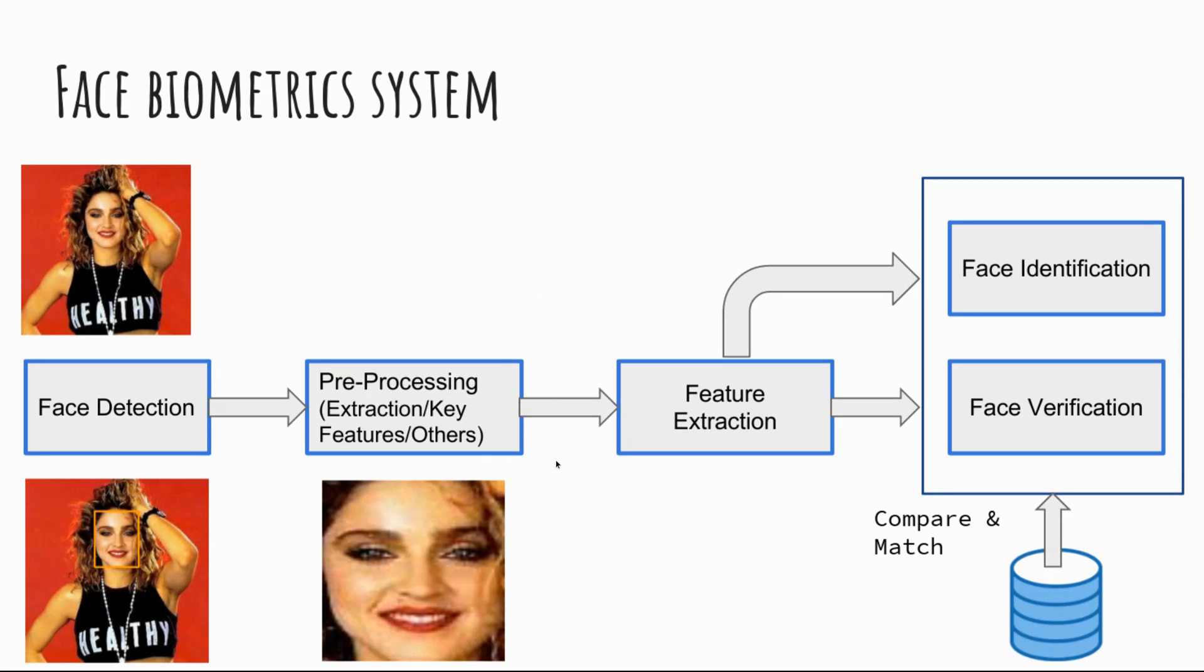For example, if you have a smart advertisement board and want to display advertisements according to a person's gender or age, you can use face attributes. There are models you can build to get information on age or gender. But for face recognition systems, the next step is feature extraction.